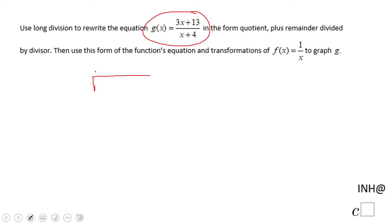We have 3x + 13 divided by x + 4. Watch: when I multiply x to get 3x, that will be 3. 3 times x is 3x, and 3 times 4 is 12. We're going to subtract now.